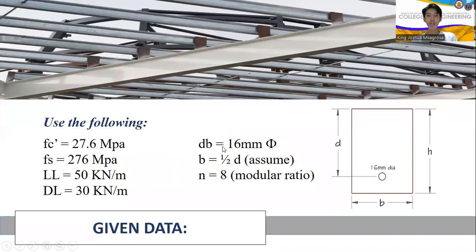Using the following given values: FC' is equal to 27.6 MPa, FS is equal to 276 MPa. The live load is 50 kN/m, dead load is 30 kN/m. The diameter of the steel bar is 16mm. The base or width of the beam is assumed to be one-half the effective depth, since it is not given. The modular ratio n is equal to 8.